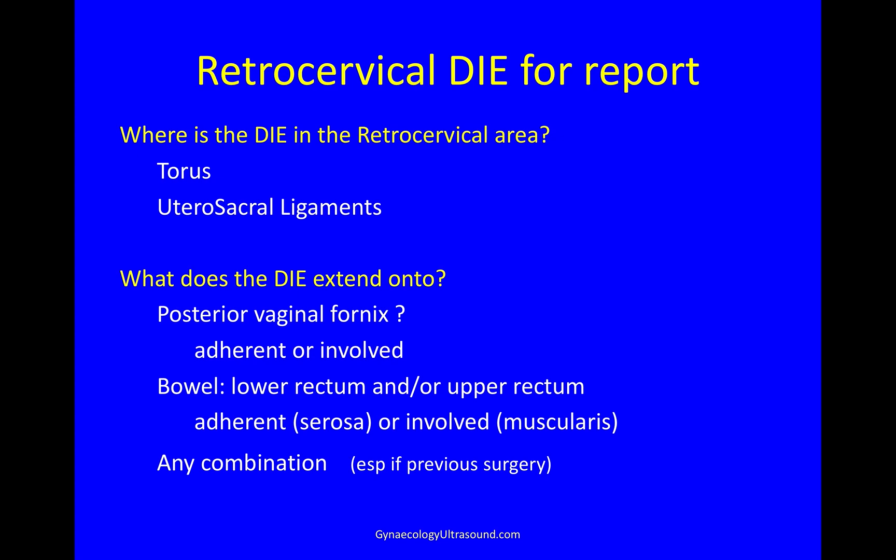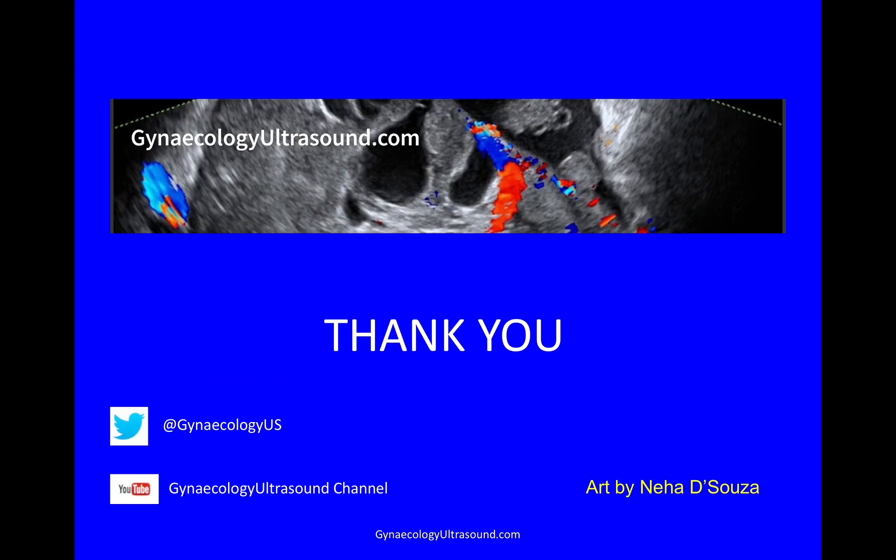So when you're describing retrocervical DIE, DIE at the torus, you have to say: is it in the torus, or maybe in the uterosacral ligaments, or in all of them? And what does it extend onto? Does it extend onto the posterior vaginal fornix? Does it extend onto the bowel — that would be lower rectum and/or upper rectum? And is it only adherent at the serosa, or is it involved at the muscularis layer of the bowel? Or any combination of the above, especially when people have had previous surgery. And that's it — thank you very much.